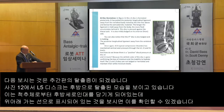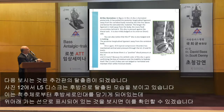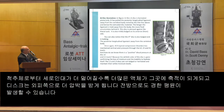Disc herniation. In Figure 12, the L5 disc is herniated posteriorly. It has pulled the posterior longitudinal ligament away from the intervertebral body, noted by the thin line above and below the extruded disc material. The longer the ligament is held away from the body, the more fluid accumulates behind it. The disc is pressed against the thecal sac and is also mildly bulged anteriorly.